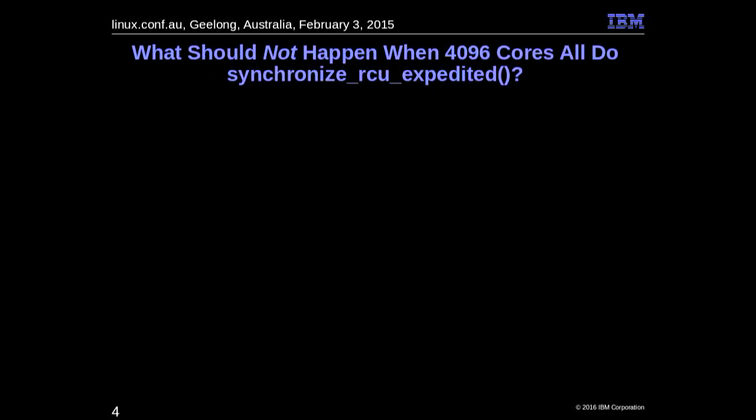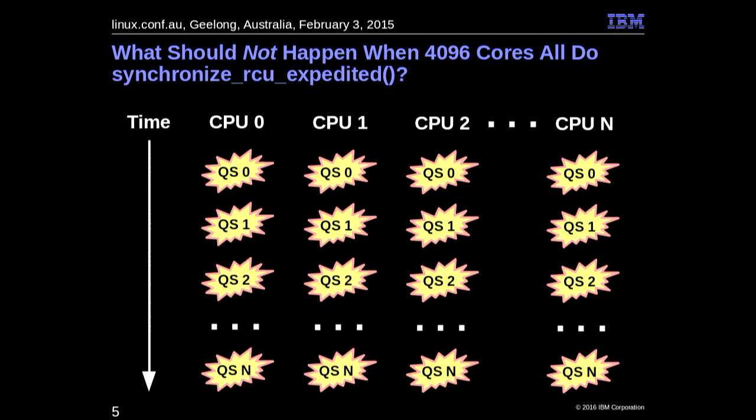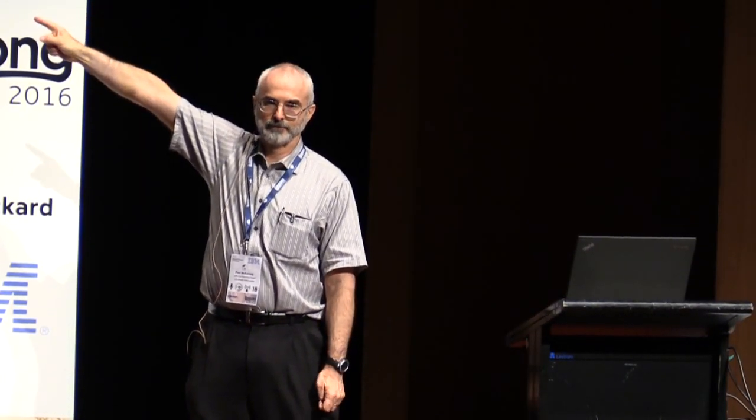So what should happen? And perhaps more importantly, what should not happen? One thing that shouldn't happen is this: if we've got 4096 CPUs, and we have a grace period, each of the CPUs might need a quiescent state. 4096 times 4096 is about 16 million quiescent states. If we actually make that happen, it's not going to be pretty. We don't want that. But what do we want instead? It's great to say we don't want some disaster, but we'd like something good to happen.